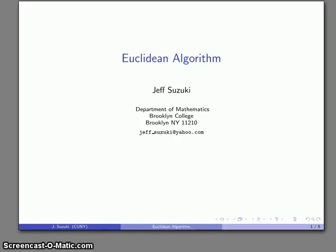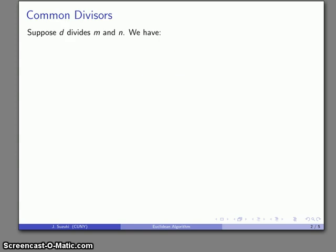Let's talk about finding the greatest common divisors of two numbers. The most efficient way of doing this is something called the Euclidean algorithm. This is actually based on some of our properties of divisors.